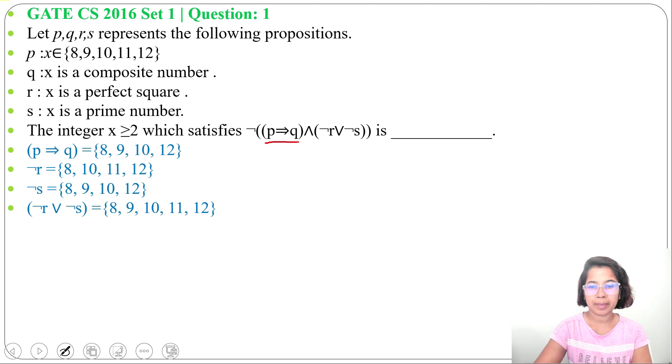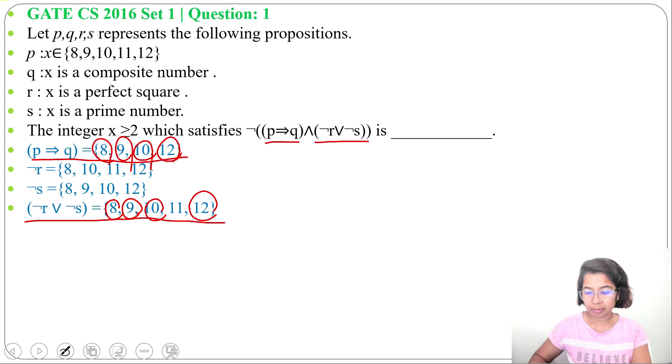Next we need to find (P⇒Q) ∧ (¬R ∨ ¬S). So P⇒Q is {8,9,10,12}, and ¬R ∨ ¬S is {8,9,10,11,12}. Now for the AND operation, which numbers are common in both? 8 is common, 9 is common, 10 is common, 12 is common. So the result is {8,9,10,12}.